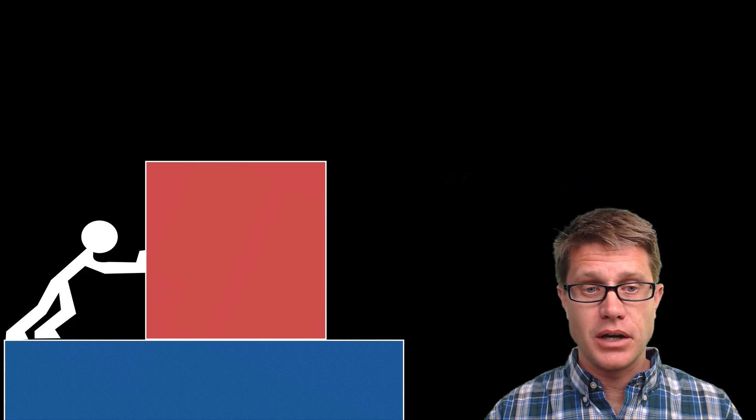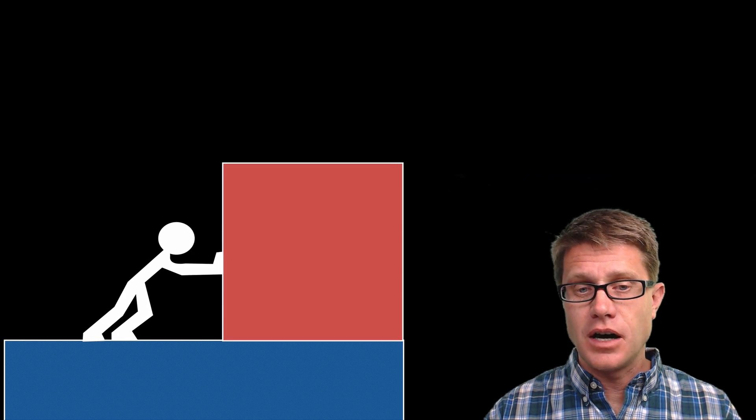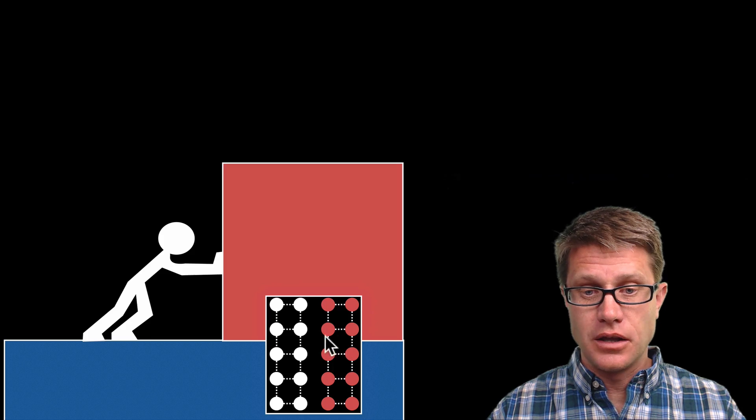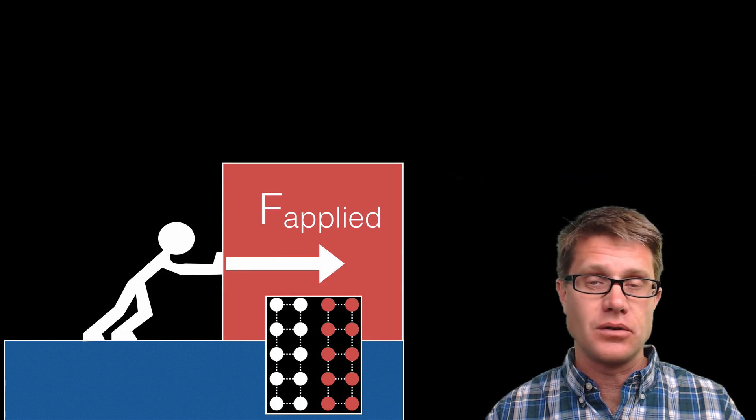What happens if we push on the object? So now we are pushing on it in this direction. What is going to happen at the atomic level? Now we have got the atoms of the hand pushing on the atoms of the object itself. And so we are going to have an applied force in that direction.